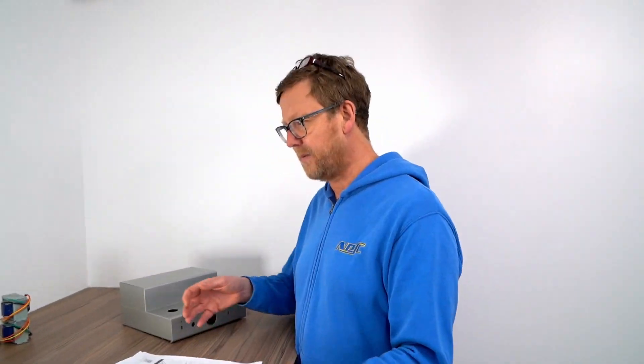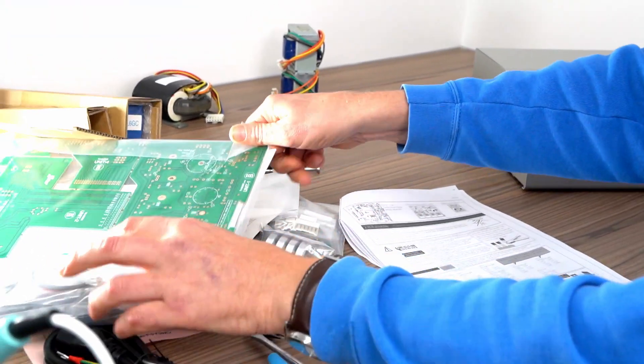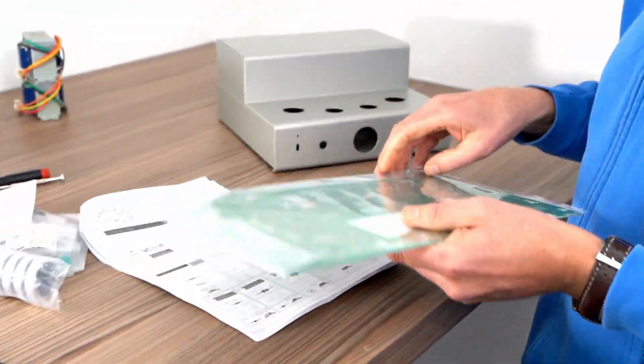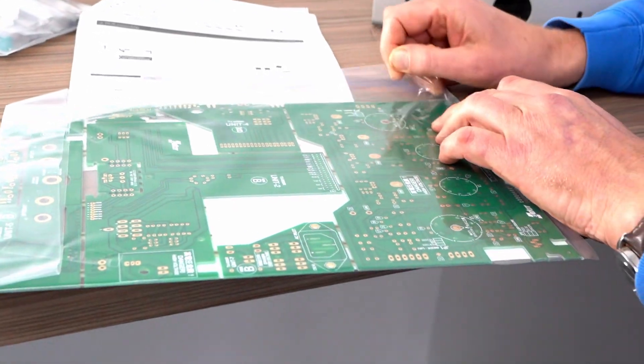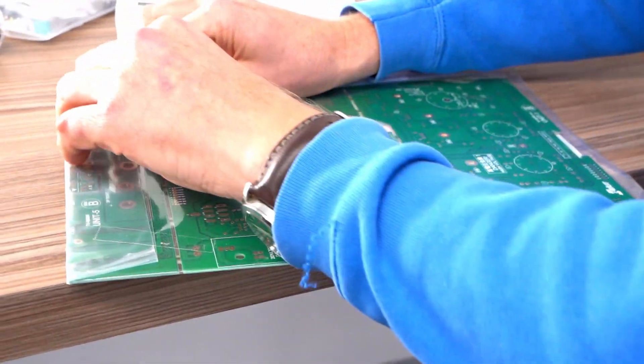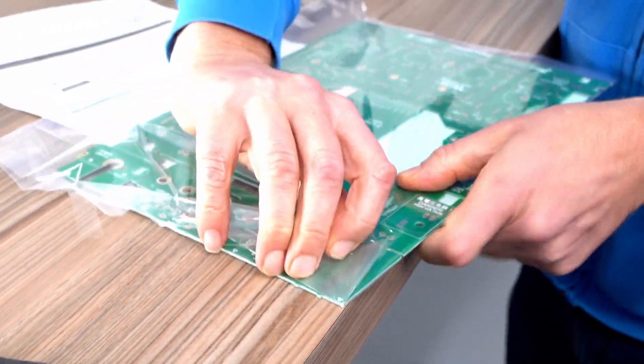So let's get the PCB, probably about 1.6mm thick PCB, looks good quality, well wrapped.